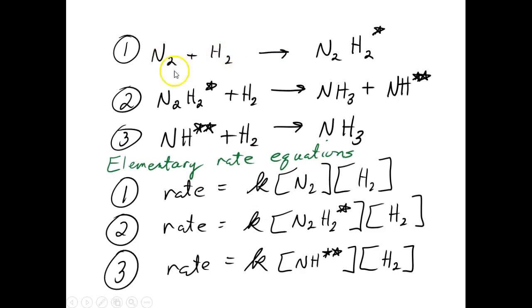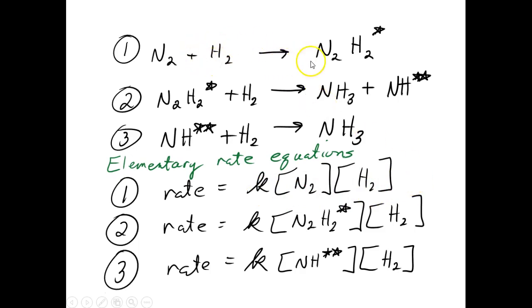Assuming that an N2 has to bump into an H2, the rate of this first step should depend on N2 and H2 to exactly the same amount — it depends on one N2 bumping into one H2. So we could write the rate for that elementary step this way. This is a theoretical rate for this theoretical step. The rate for the second step would be equal to this, and the rate for the third step as well. We don't really know what these k values are — they could be huge or small, depending on how unstable the reactants are.